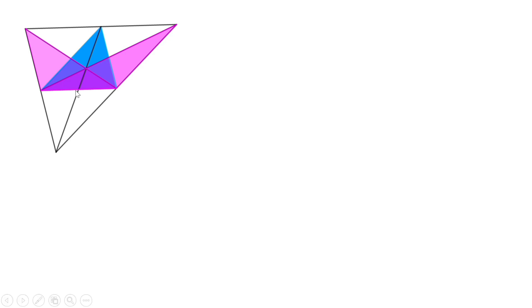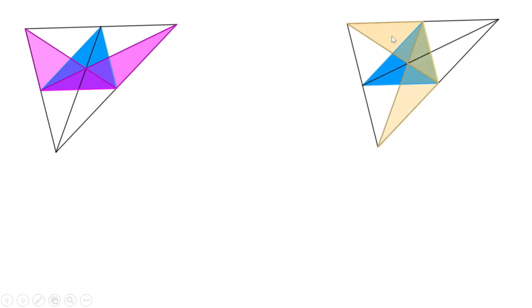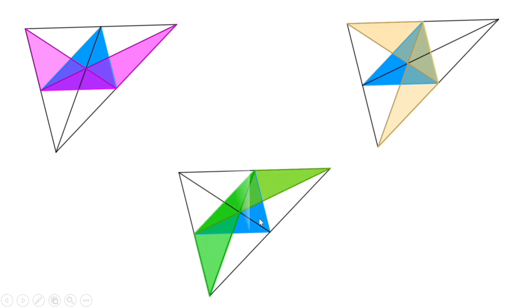Now instead of taking this side, let me take the second side. Here again we get two triangles having the same area of the blue triangle, because they have the same base and their third vertices are on a line parallel to the base. Now let me take the third side. Here again the green triangles have the same area of the blue triangle for the same reason. So now we have found six triangles having the same area as the blue triangle.